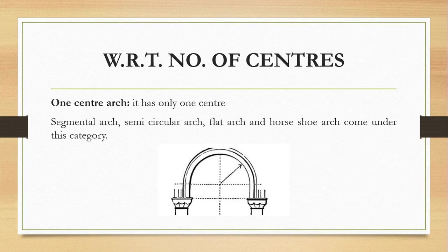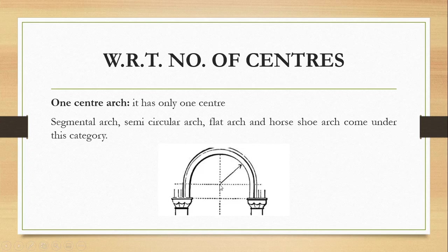Now let's discuss types of arches with respect to the number of centers. Arches can have one to five centers, but at this level we will study only up to three centers. A one-center arch has a single center point, and examples include the segmental arch, semi-circular arch, flat arch, and horseshoe arch. In this type, the radius is the same throughout and the diameter is equal.